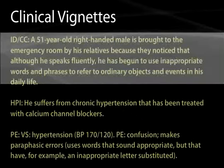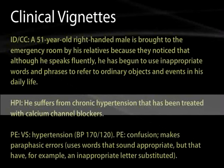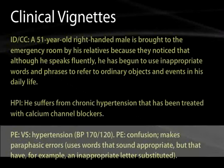Another clinical vignette: a 51-year-old right-handed male is brought to the ER because, although he speaks fluently, he has begun using inappropriate words and phrases to refer to ordinary objects and events. He has chronic hypertension treated with calcium channel blockers. On exam, blood pressure is 170 over 120, and you note confusion. He makes paraphasic errors — words that sound appropriate but have an inappropriate letter substituted; for example, saying 'bird' instead of 'word.' A neurologist hearing this would suspect damage in the left parietal region near the temporal-parietal junction. This would be a Wernicke's-type or fluent aphasia.